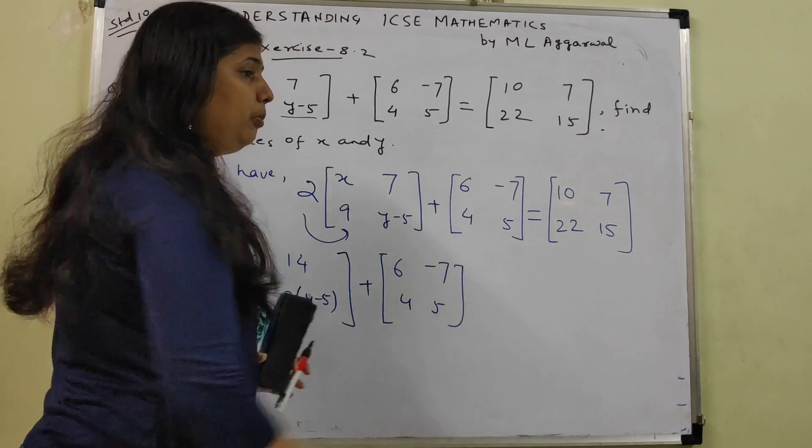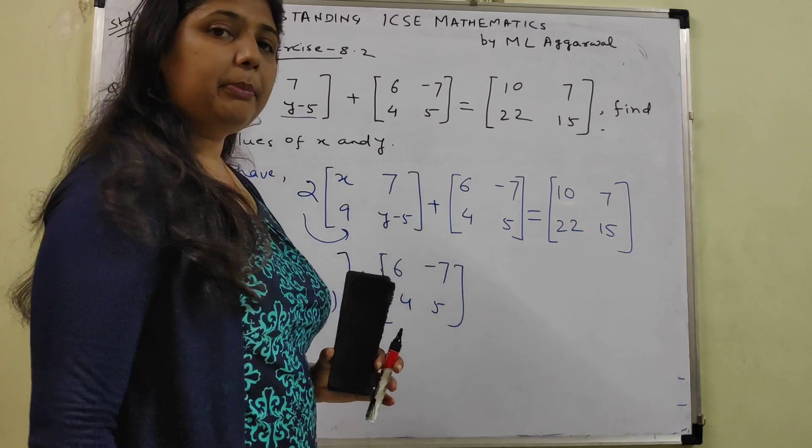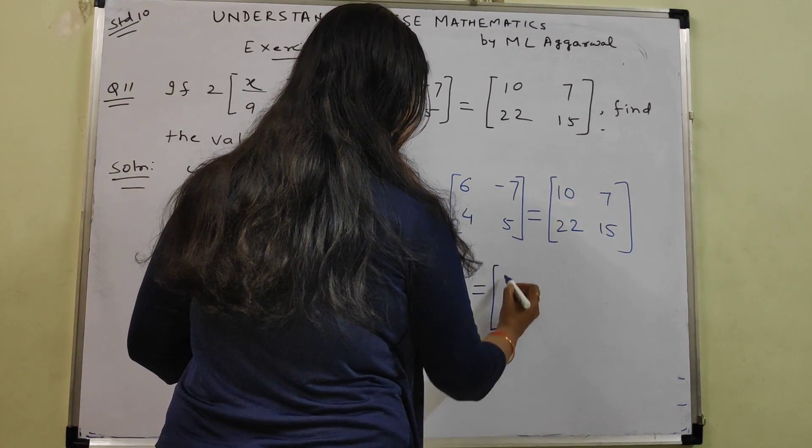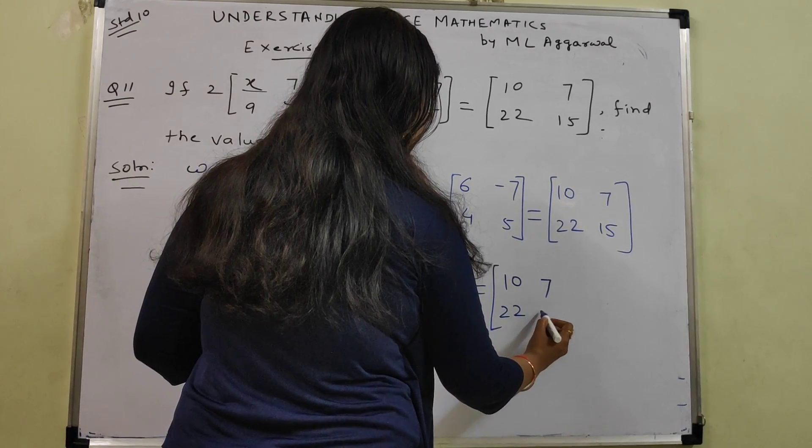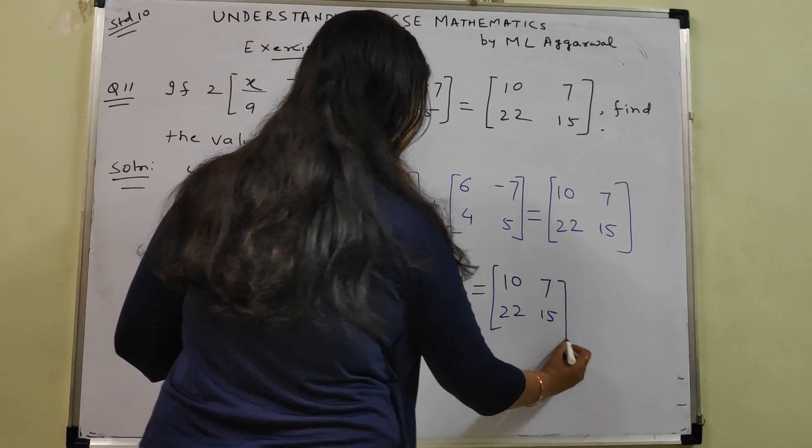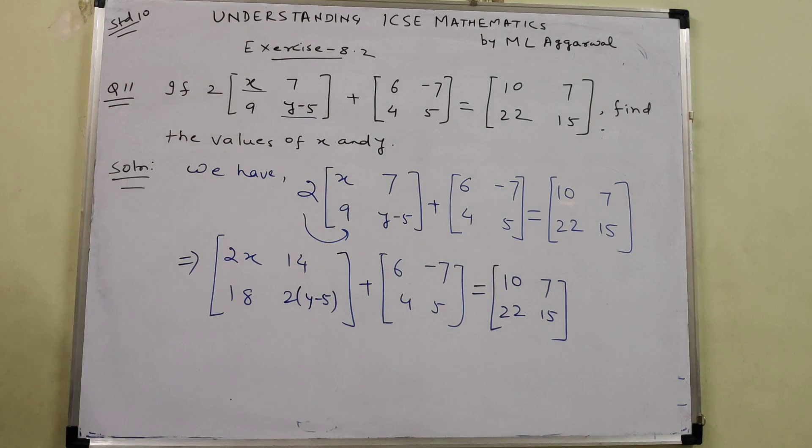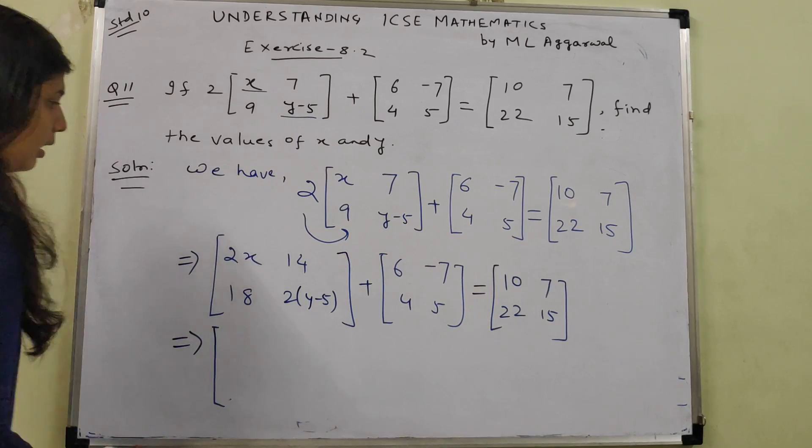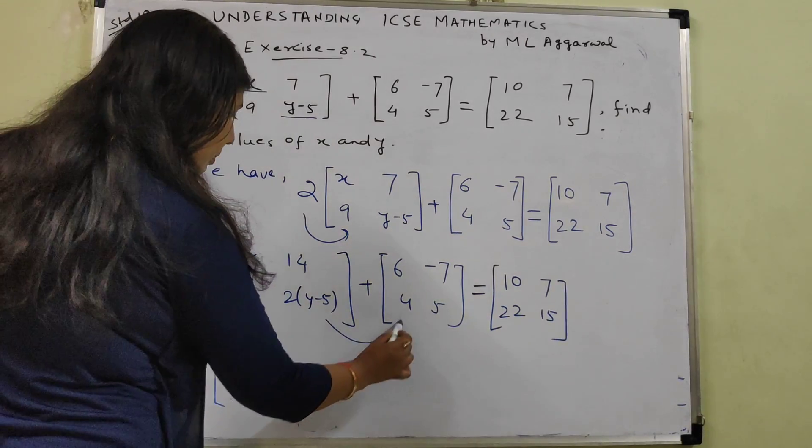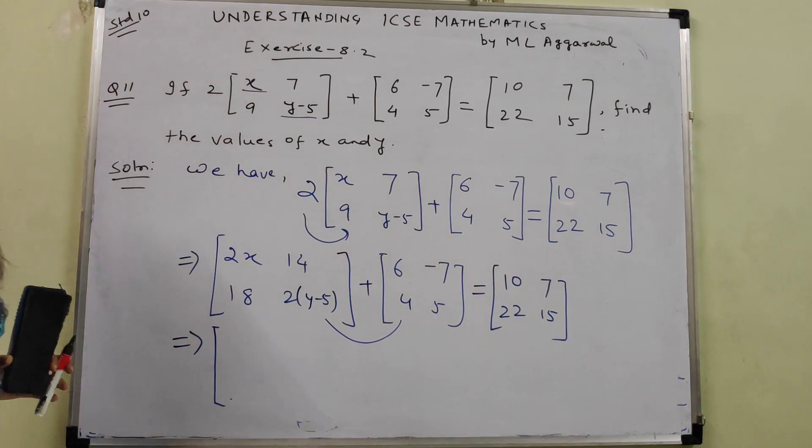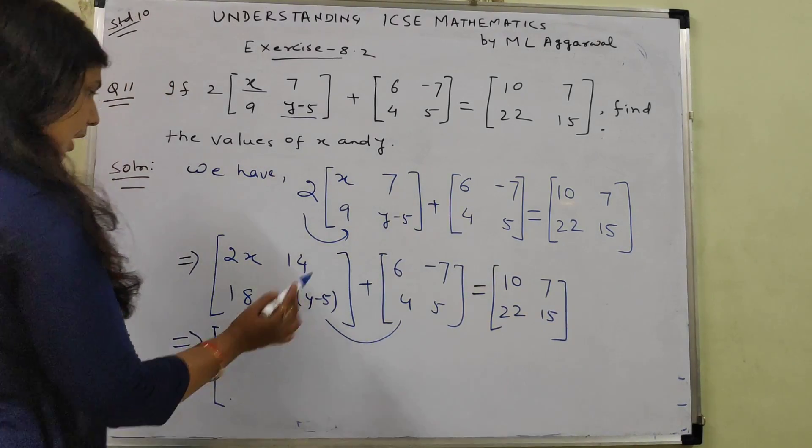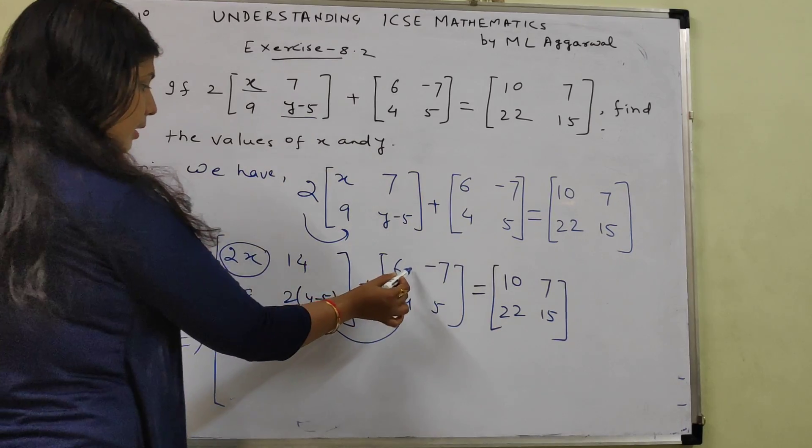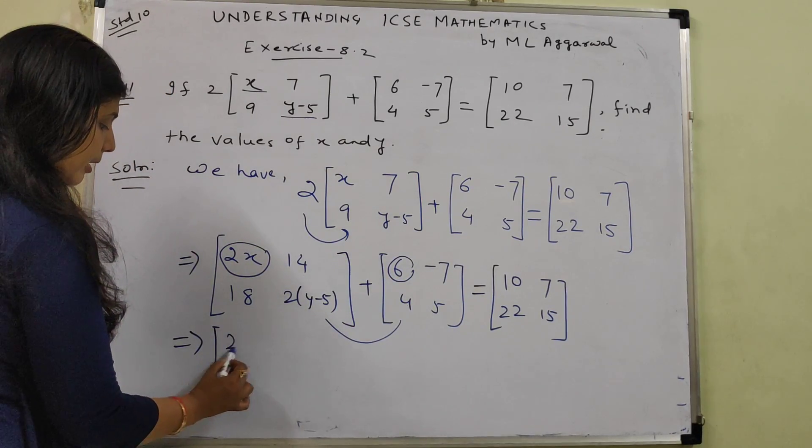This is an equation form. We can call it matrix equation. Now as addition of 2 matrices, corresponding elements will get added. That we are aware. So this element and this element will get added in 1 matrix.